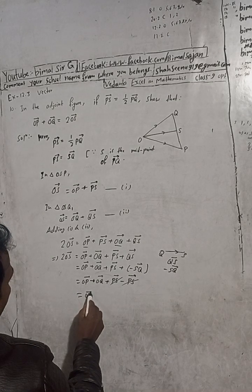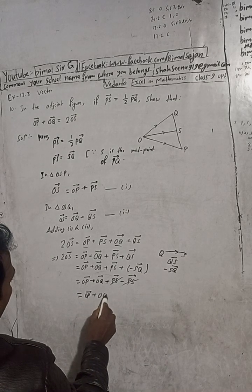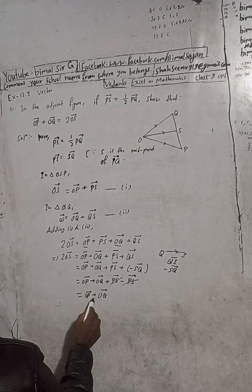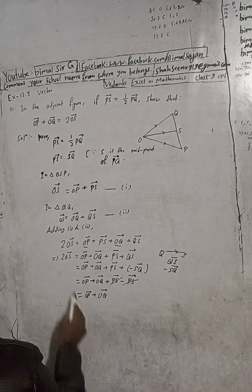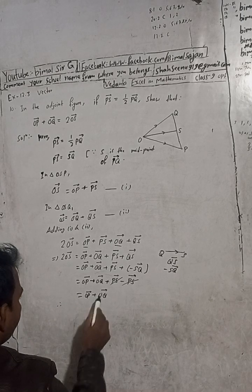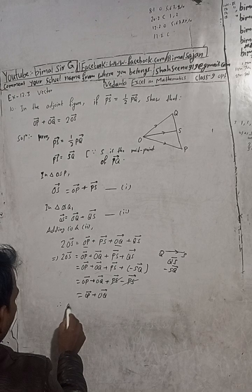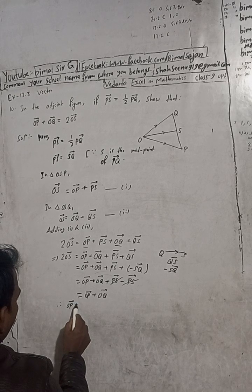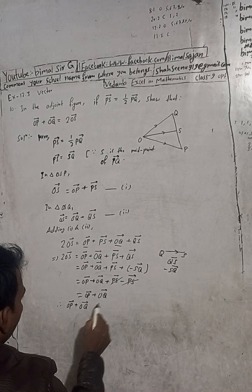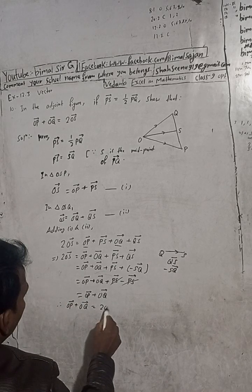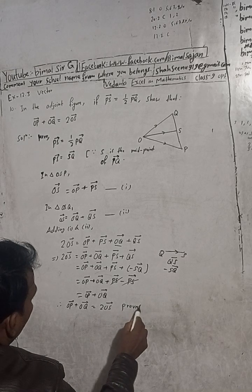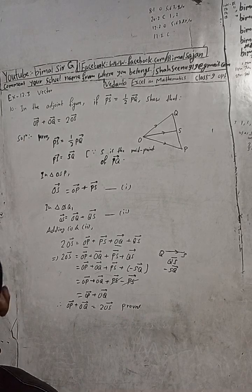Therefore this is equal to OP vector plus OQ vector. So OP vector plus OQ vector is equal to 2 OS vector — proved. This is the solution.